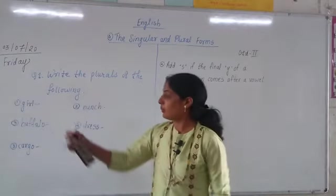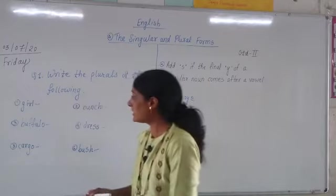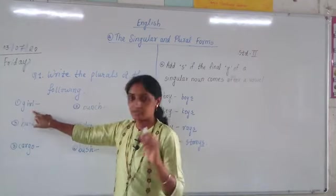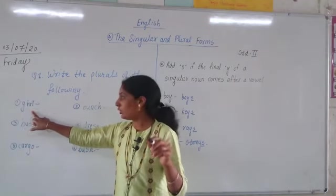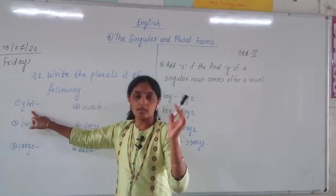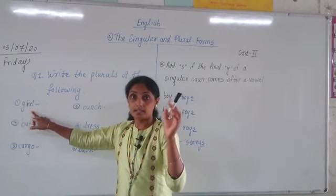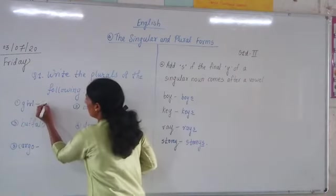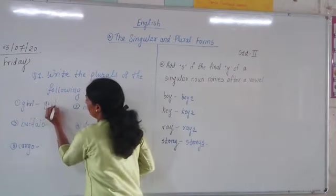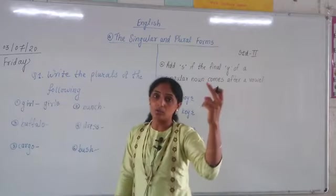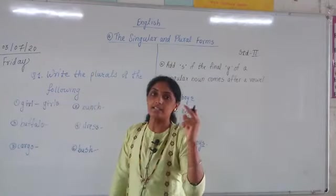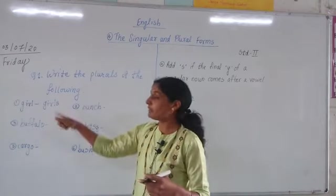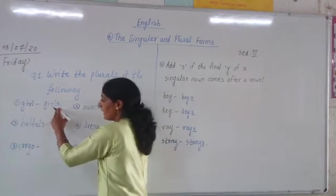For the word 'girl': there is no 'F', 'Y', 'O', 'SH', 'CH', or 'X' at the ending. So we simply add 'S'. The singular noun is 'girl' and the plural form is 'girls' — we add normal 'S'.